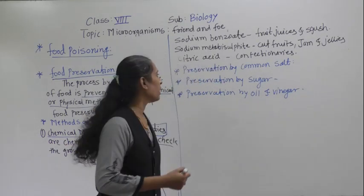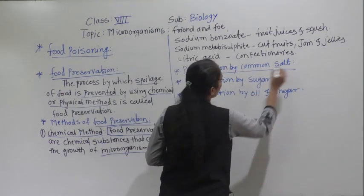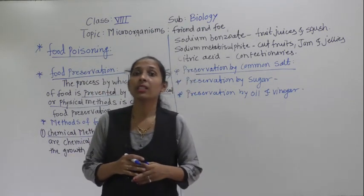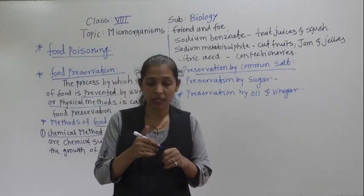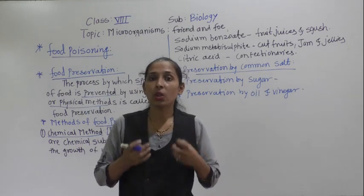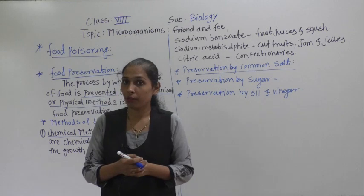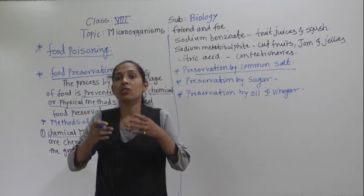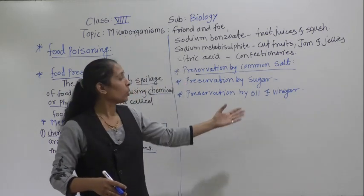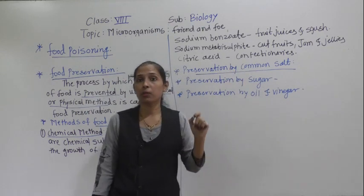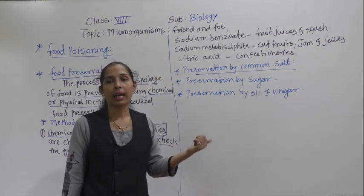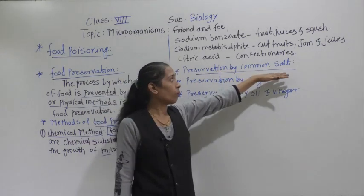The first method to preserve food is the chemical method. The next method is preservation by common salt. From ages, people have been using common salt to preserve food. We cover the food material with common salt, and the salt absorbs all the excessive water from the food material, stopping the growth of microorganisms. This method is used to preserve fish, meat, amla, and tamarind. It is also called salting.